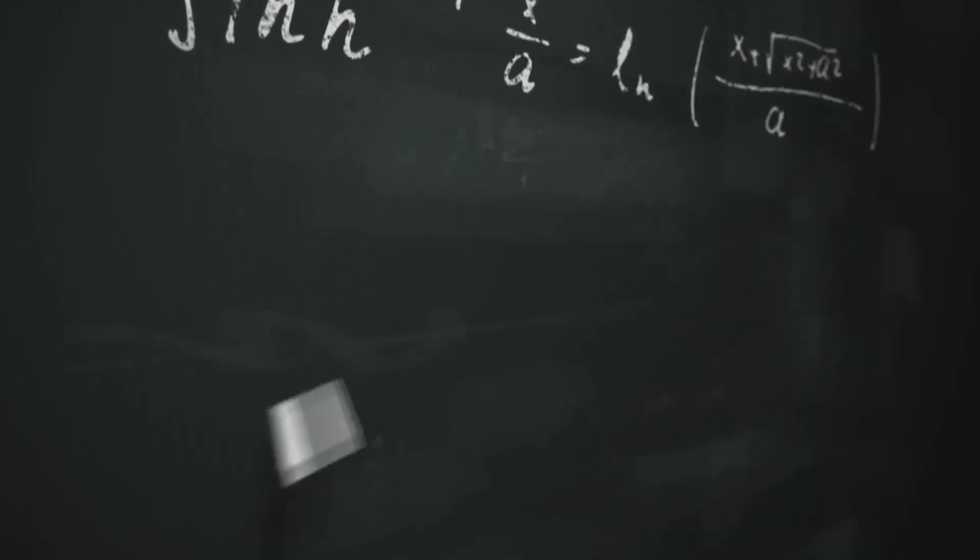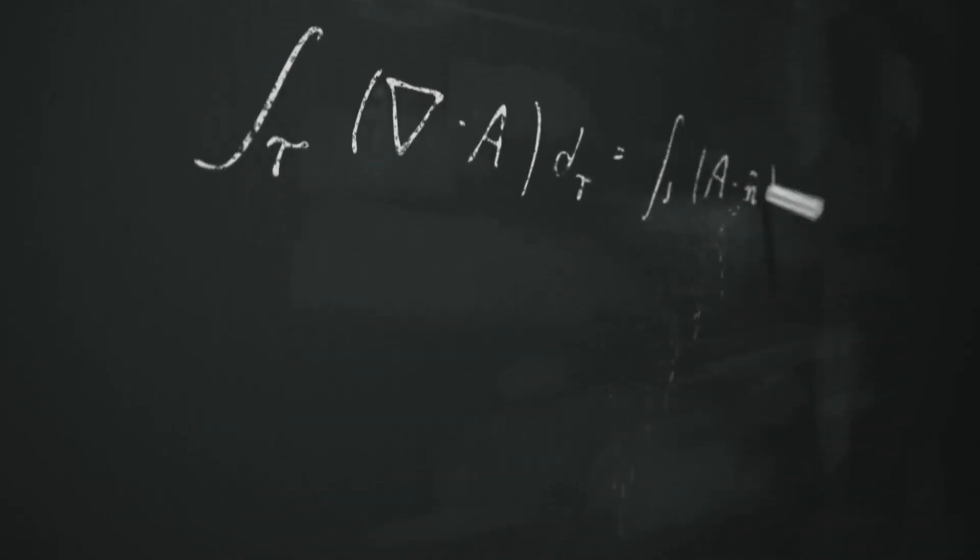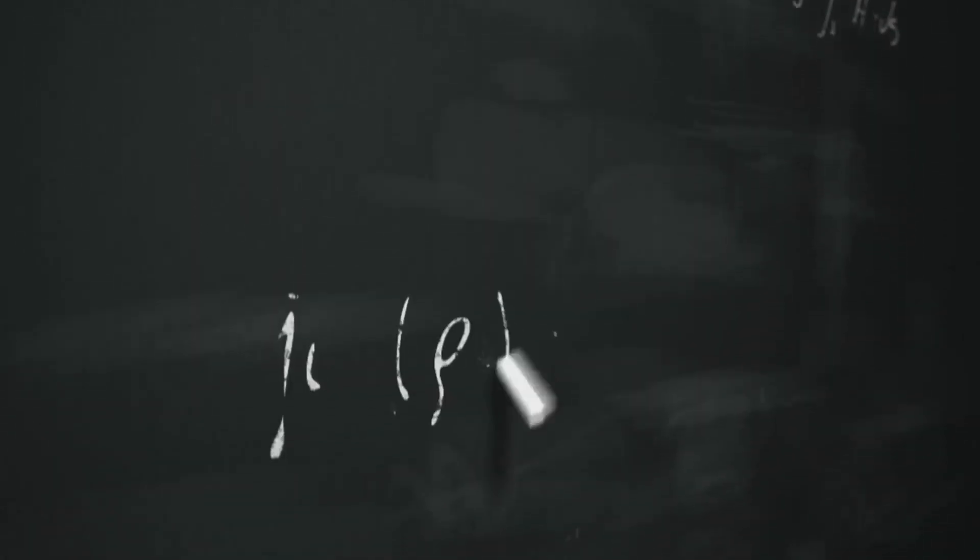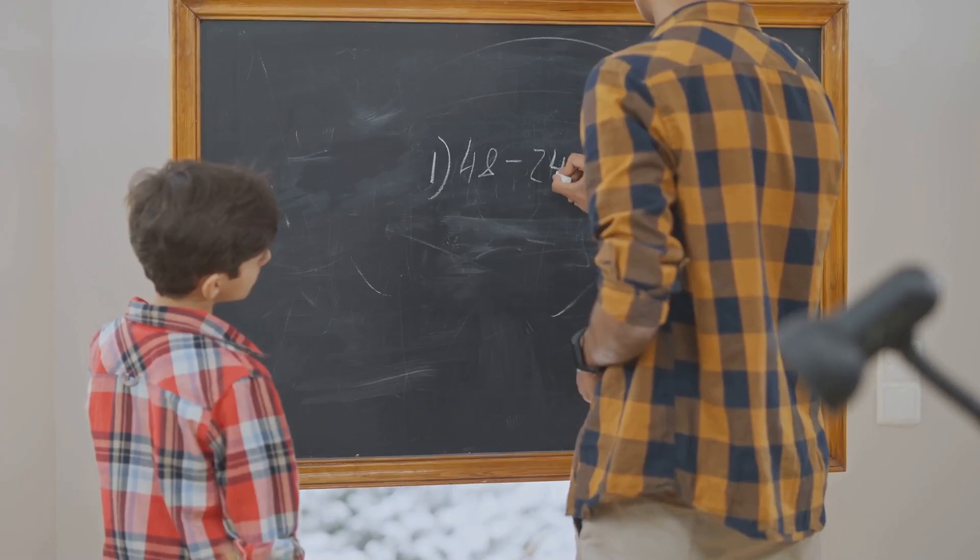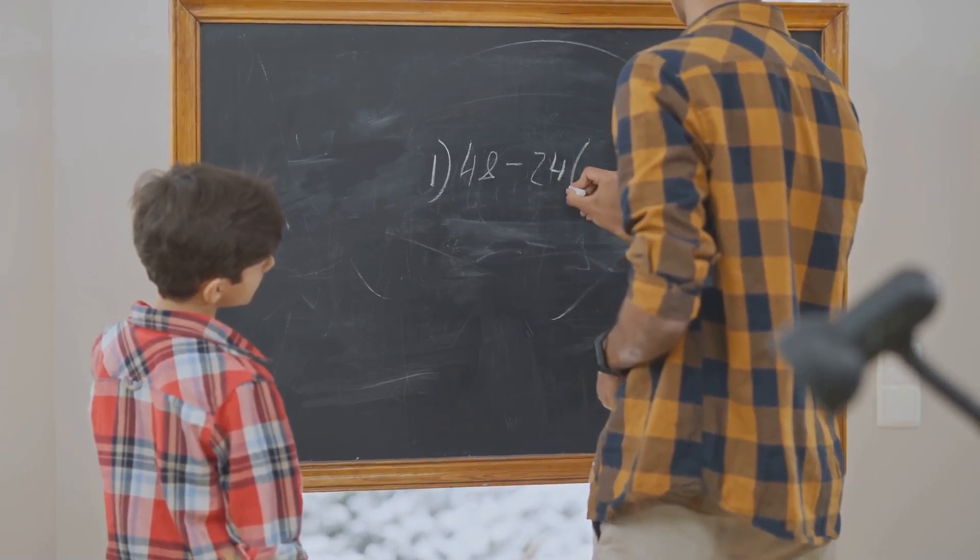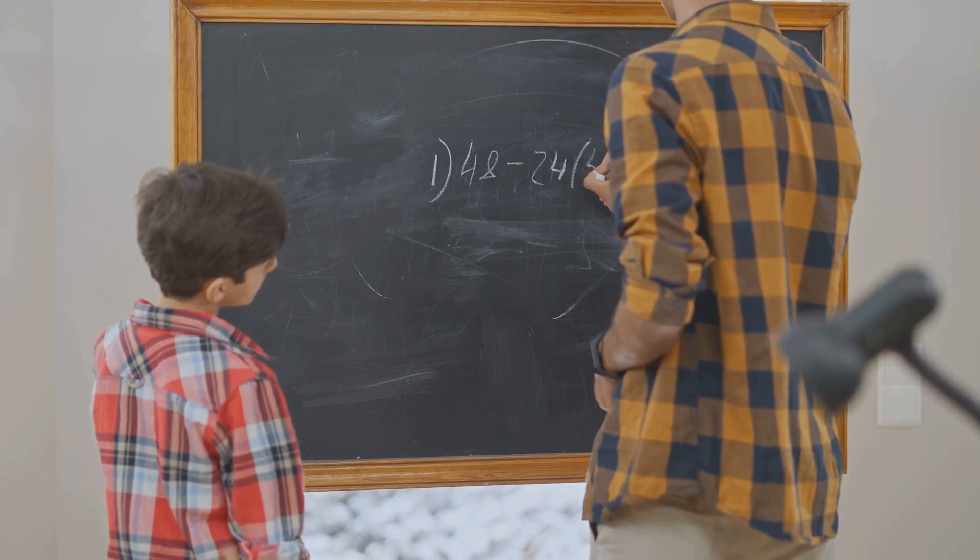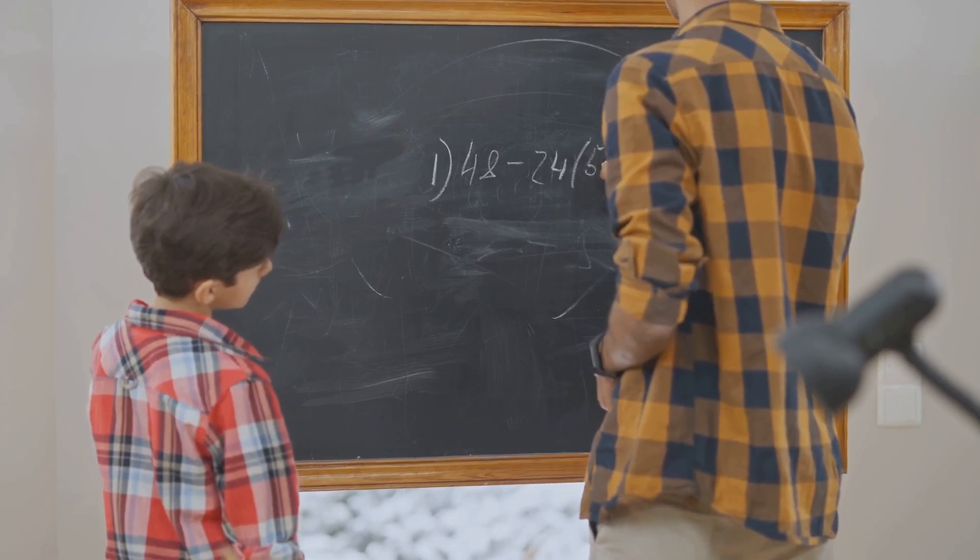Originating in the year 1742, this conjecture was proposed by a man named Christian Goldbach, hence the name. It's a problem so simple in its essence that even a third grader could grasp it, yet it remains elusive to the sharpest minds in the world.